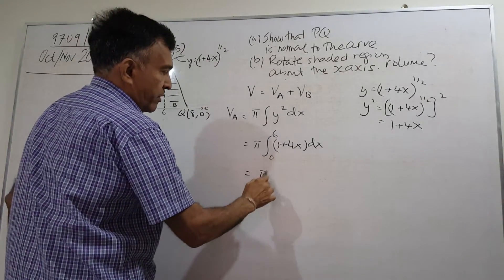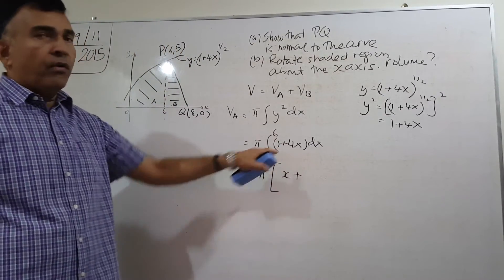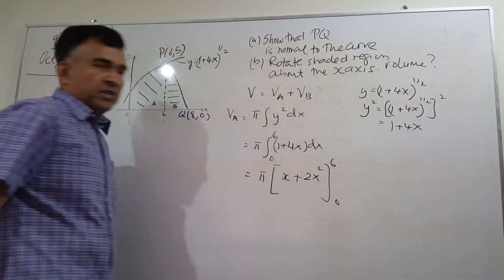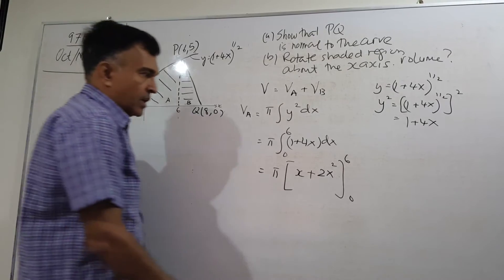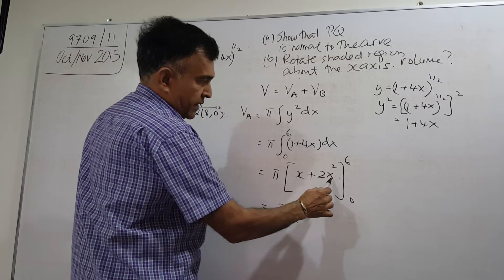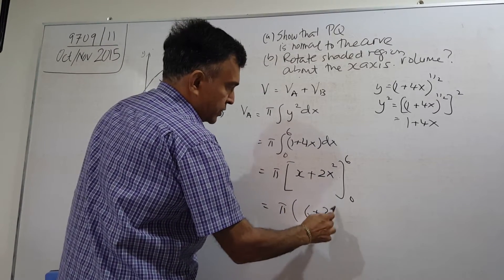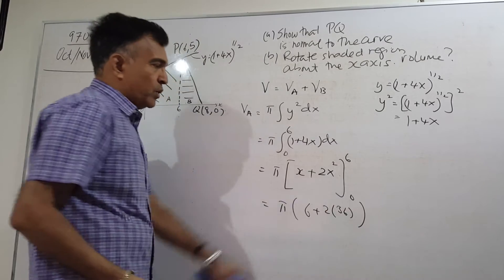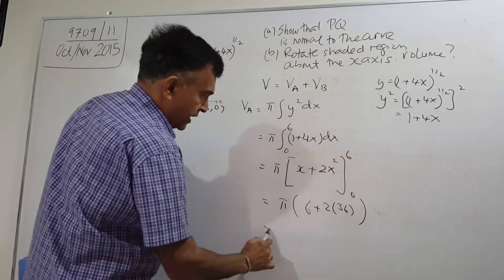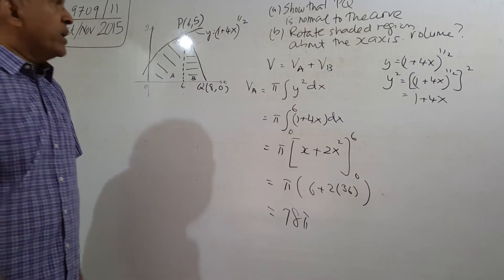Now let's do the integration. We have π, and integrating 1 with respect to x gives x, and integrating 4x gives 2x². With the upper limit of 6 and lower limit of 0, plugging in 6 gives 6 plus 2 times 36, which is 6 plus 72 equals 78. Plugging in 0 gives 0, so VA equals 78π.